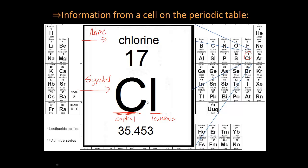So Cl, this is not an I. An I would be dotted. So Cl is chlorine. This is the symbol. That's a universal thing. This is what I was talking about earlier. This is the atomic number.